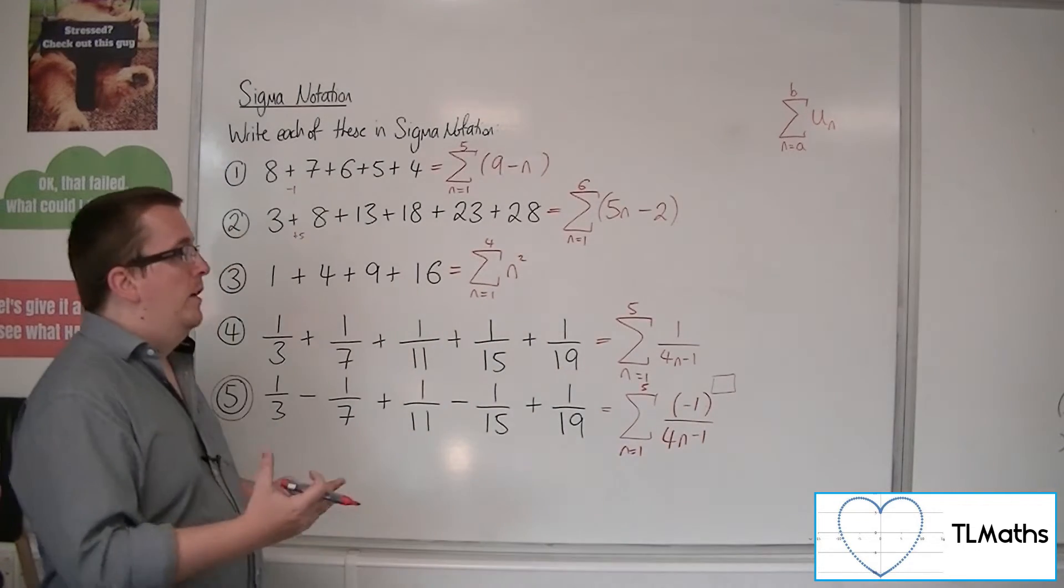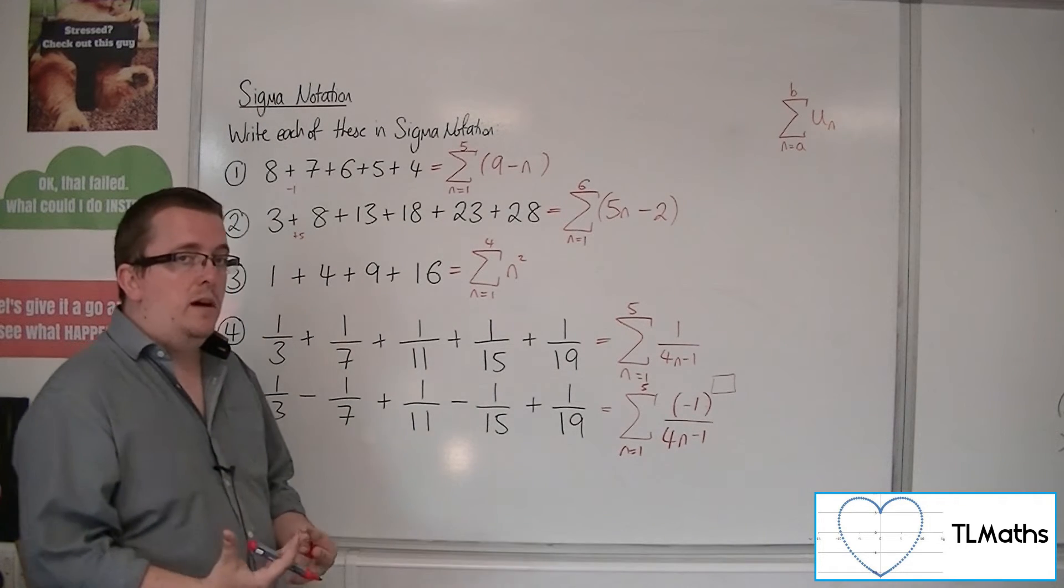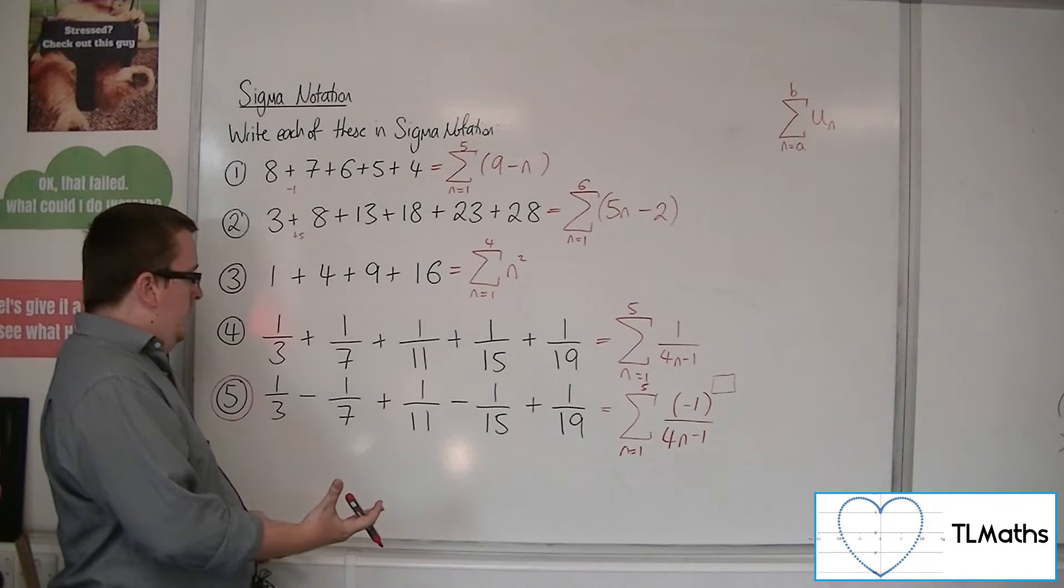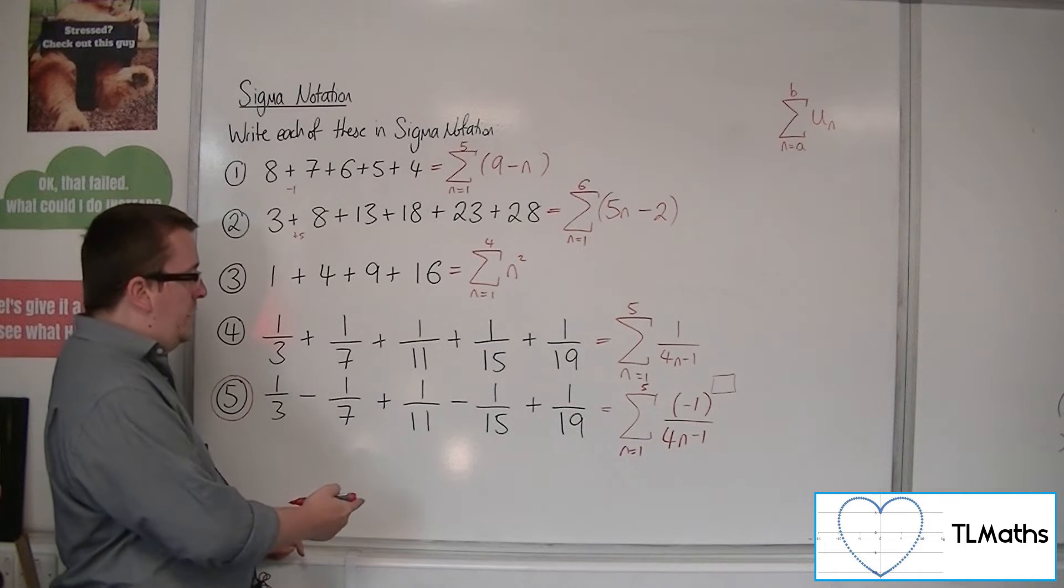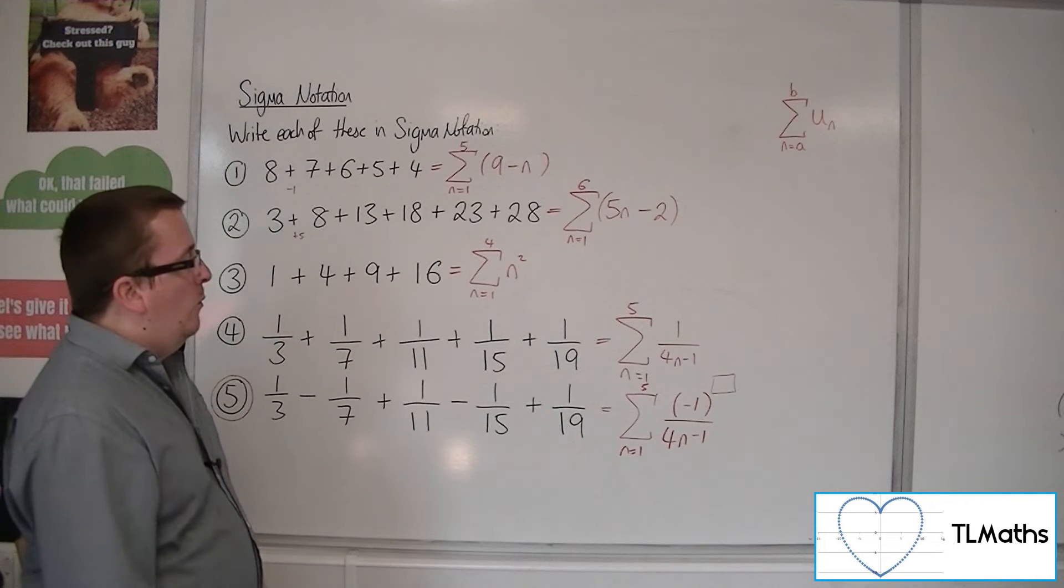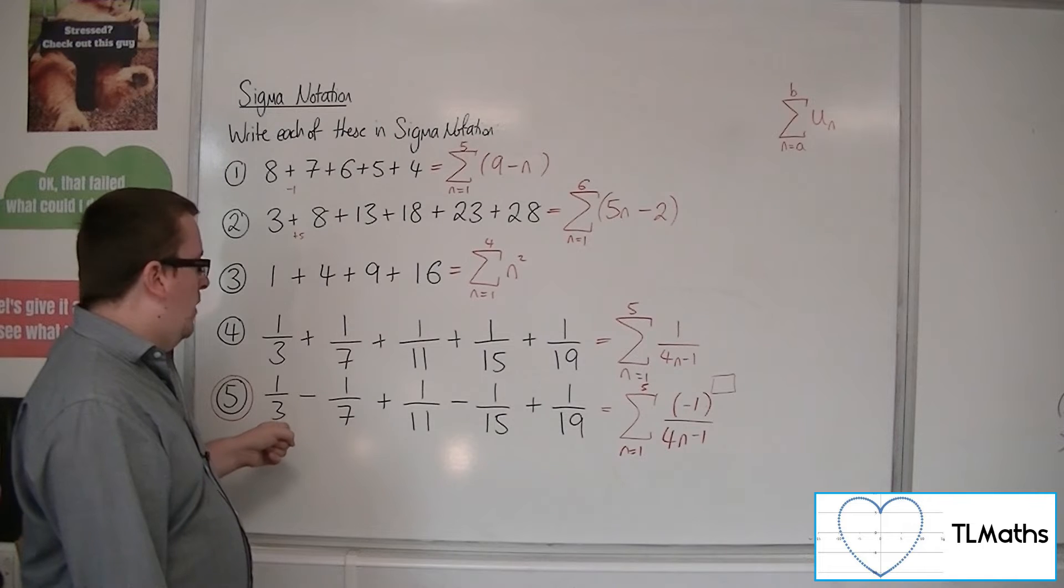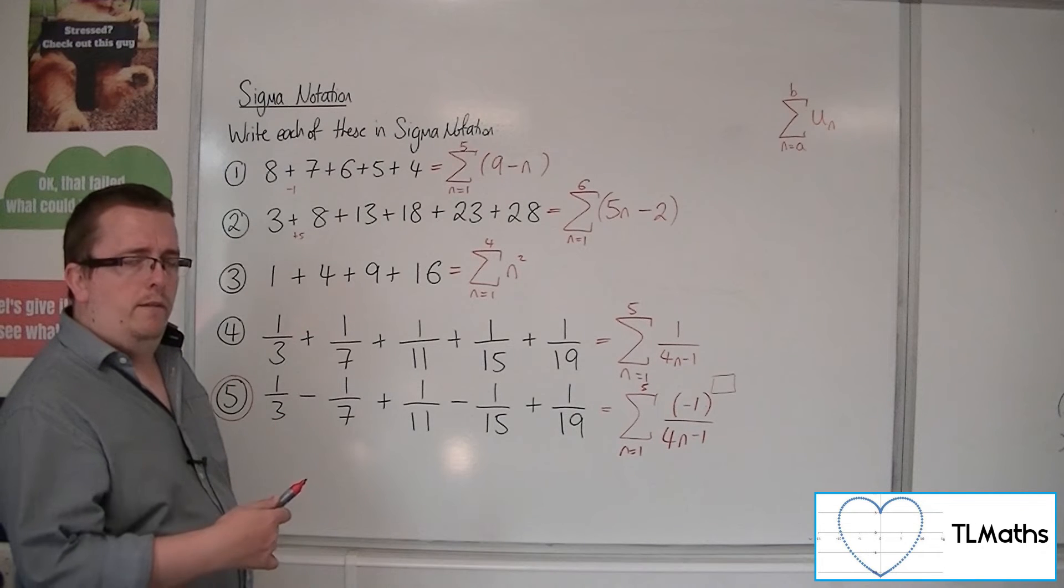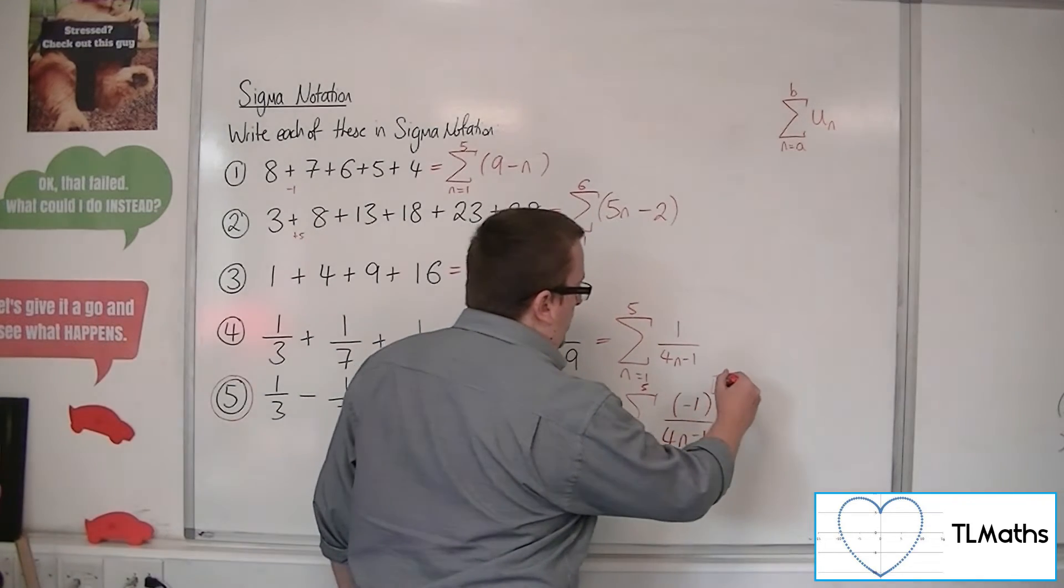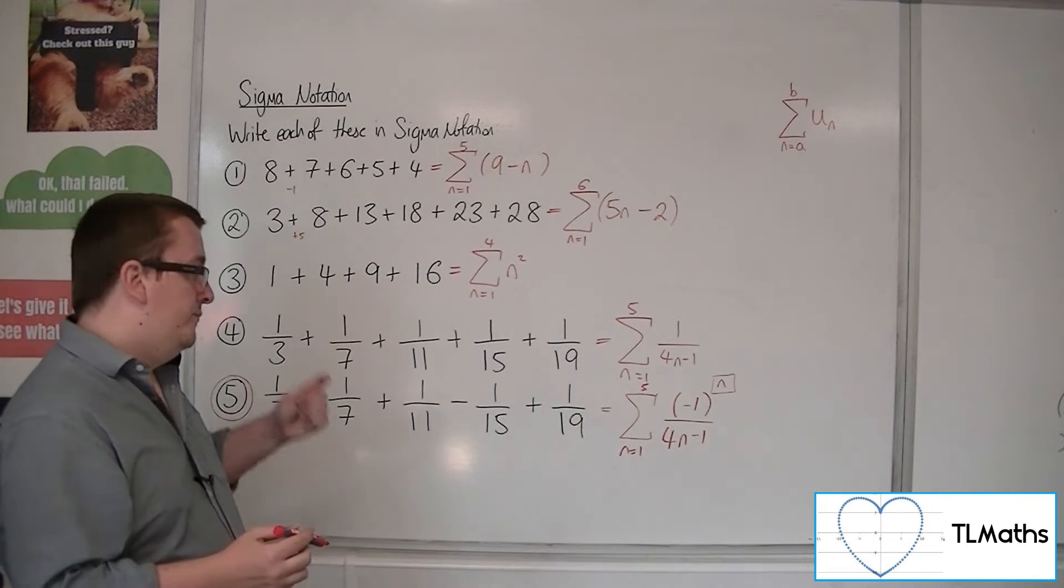Because we know that minus 1 to the power of an odd number will be minus 1. Minus 1 to the power of an even number will be 1. And so as long as it is 1 when we have an odd number and minus 1 when we have an even number for the position, then we've got what we need. Now, because we want the first one, one third, when n is 1 to be positive, if I just put n up here, when n is 1 I'm going to get minus 1. So it can't just be n.